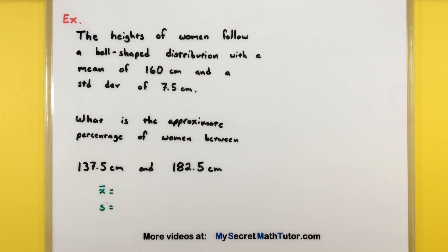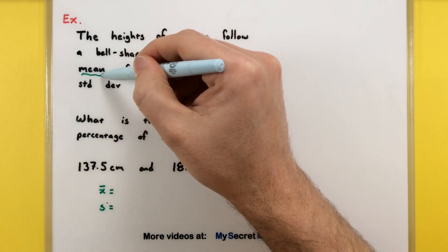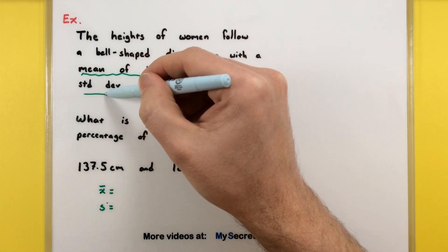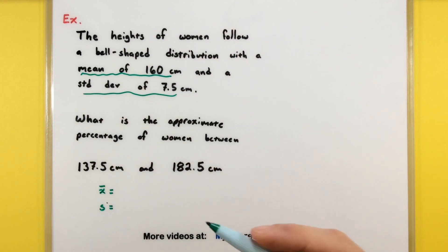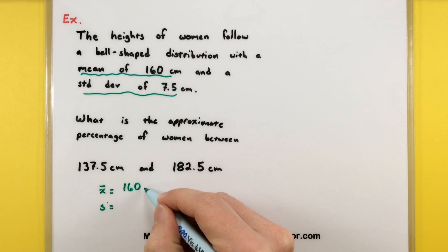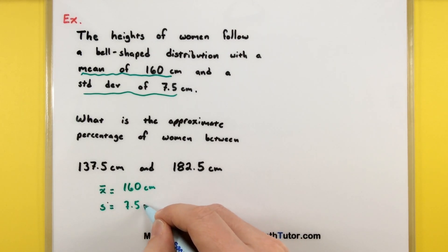We want to know what is the approximate percentage of women between 137.5 centimeters and 182.5 centimeters. Like before, it's always a good idea to identify what the mean and standard deviation is when you're given that information, especially for bell-shaped or normal distributions. We have a mean of 160 centimeters and standard deviation of 7.5 centimeters.